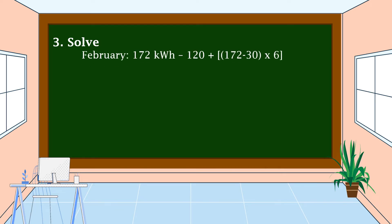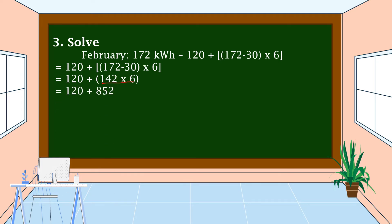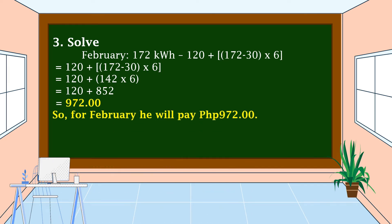For February, the electric consumption is 172 kWh, so we compute: 120 plus (172 minus 30) times 6. First, 172 minus 30 equals 142. Then 142 times 6 equals 852. Finally, 120 plus 852 equals 972. So for February, Joshua will pay 972 pesos.